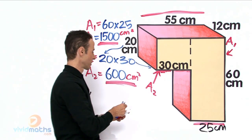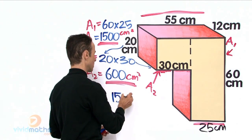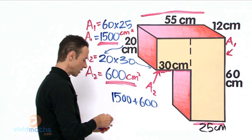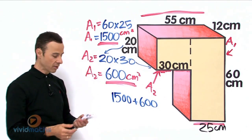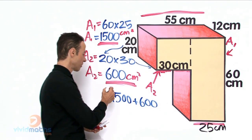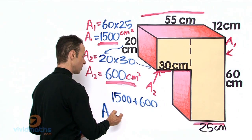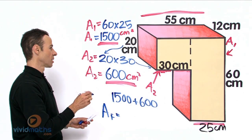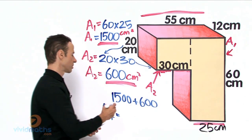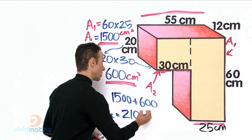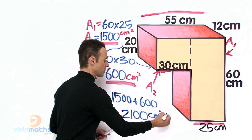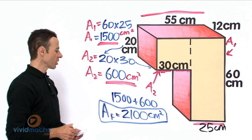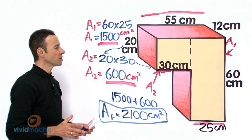So we are going to have 1500 from up there, area one, plus area two, 600. And that is going to give us a grand total of what all that face is in beige, the total area there. So that is going to give us a grand total of area of the face equals 1500 plus 600, is going to give us grand total of 2100, and that is cm squared. So there is our area of the face all the way across there.